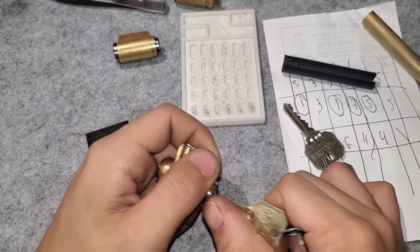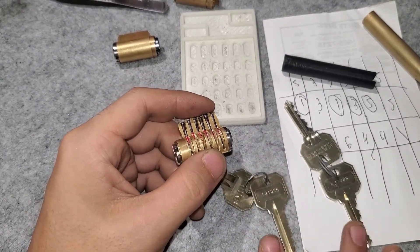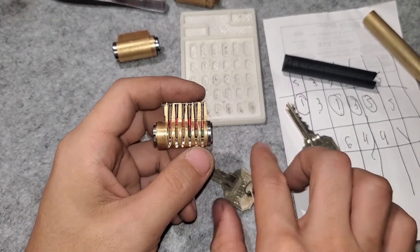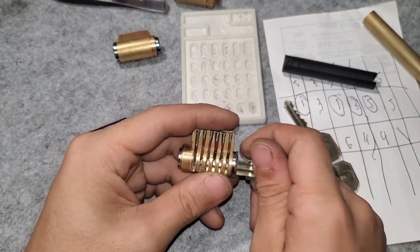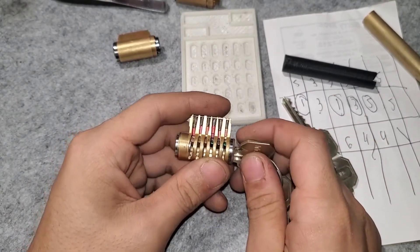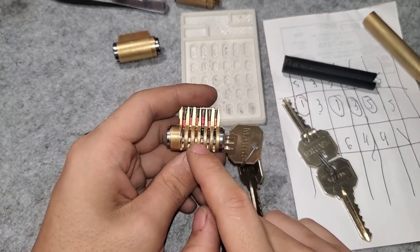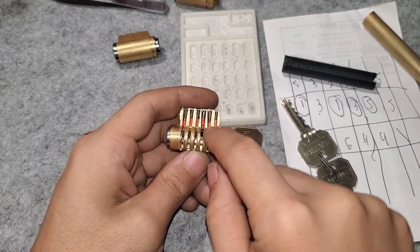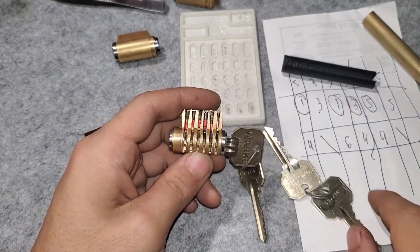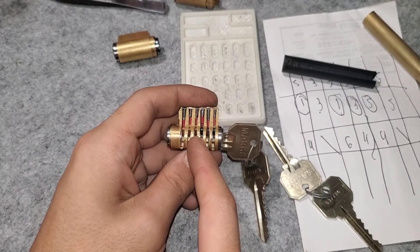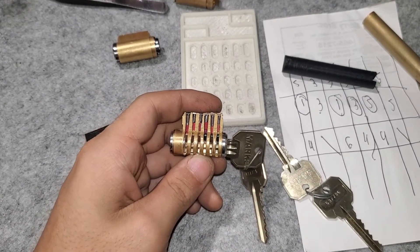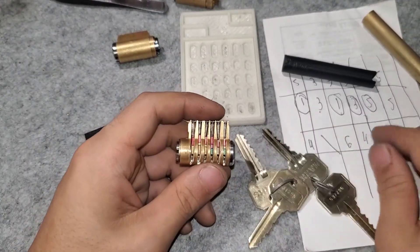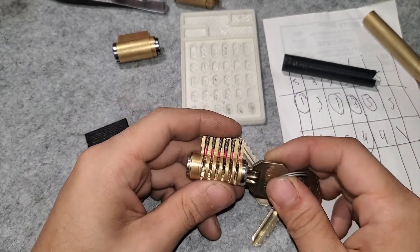And with master keying you have to be careful because you can create what's called an incidental master key, meaning if you have too many wafers you can create a key that may not even be in the system and it also happens to work this lock. Like in this case, we could have a key that is, let's say right here in the middle, chamber three. And that number, what is that, six? The master wafer sits below the shear line. That will also operate this lock. So that's just something to be aware of in master keying.